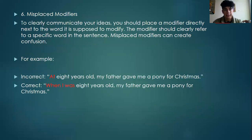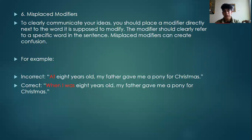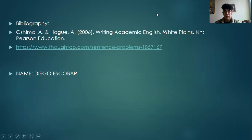The last error is misplaced modifiers. To clearly communicate your ideas, you should place a modifier directly next to the word it's supposed to modify. The modifier should clearly refer to a specific word in the sentence. Misplaced modifiers can create confusion. For example, the incorrect way is "At eight years old, my father gave me a pony for Christmas." The correct way is "When I was eight years old, my father gave me a pony for Christmas." So, that was all about this topic. Thank you for your attention.